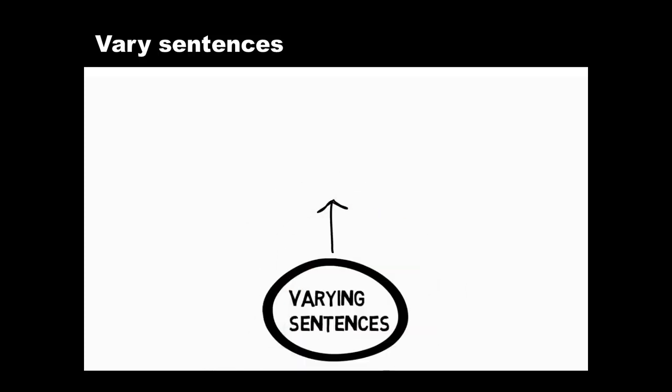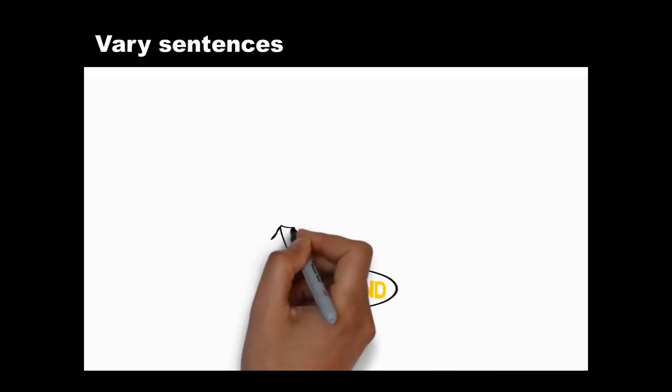So far we've been looking at simple sentences and how to vary them. Simple sentences have one independent clause and express one main idea. You can also vary your writing by creating compound sentences. These combine more than one main idea. Let's look at two different ways to join ideas.